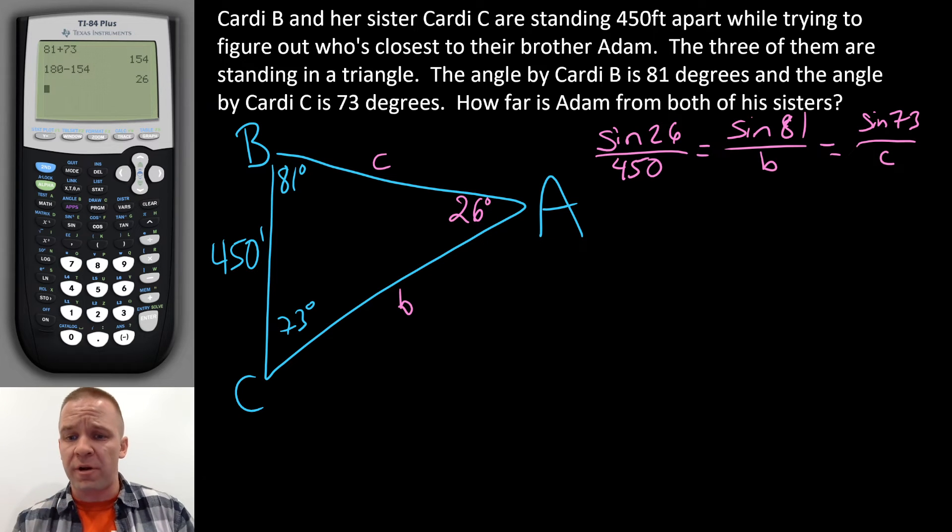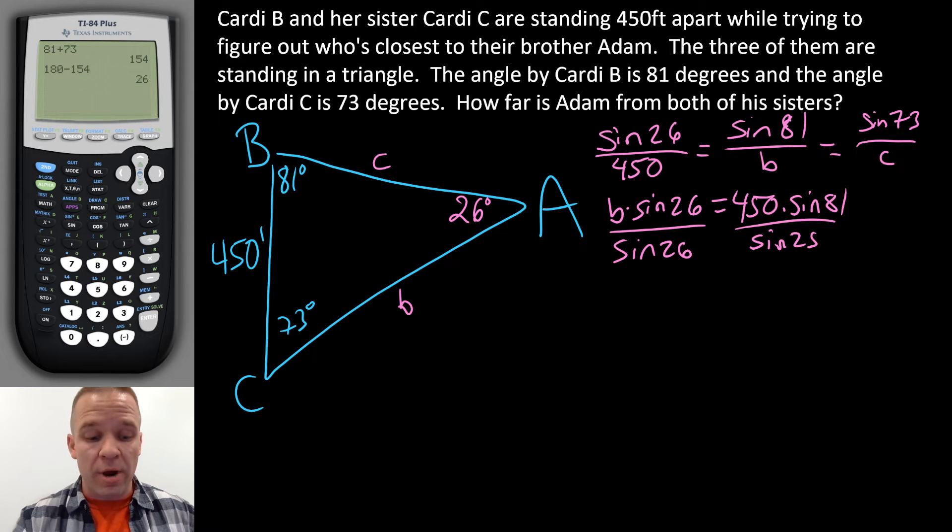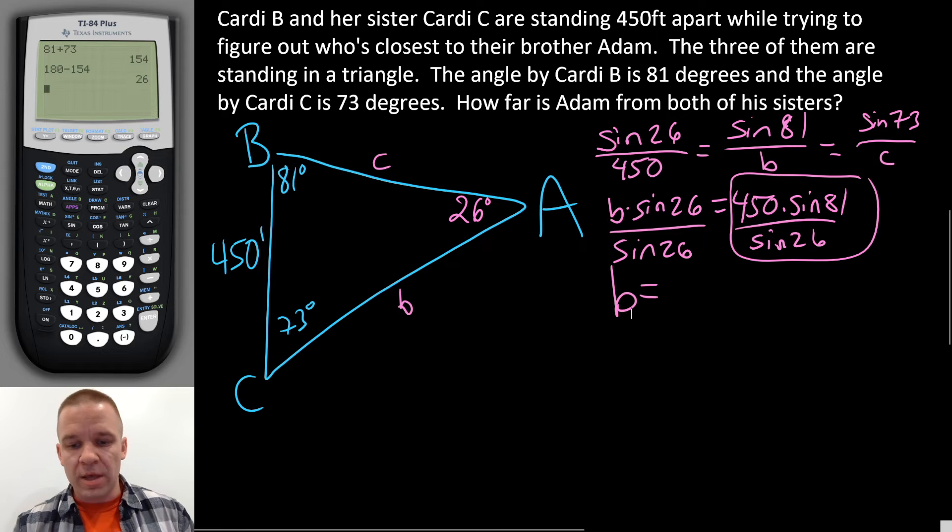So if I'm going to solve for little b first, I'm going to have to cross multiply. I'm going to have b times the sine of 26 equals 450 times the sine of 81. Then I'm going to divide by the sine of 26. I'm working with law of sines at this point, because now we're actually applying it. This is the mess that I need to plug into my calculator to get little b. All right, so let's do it.